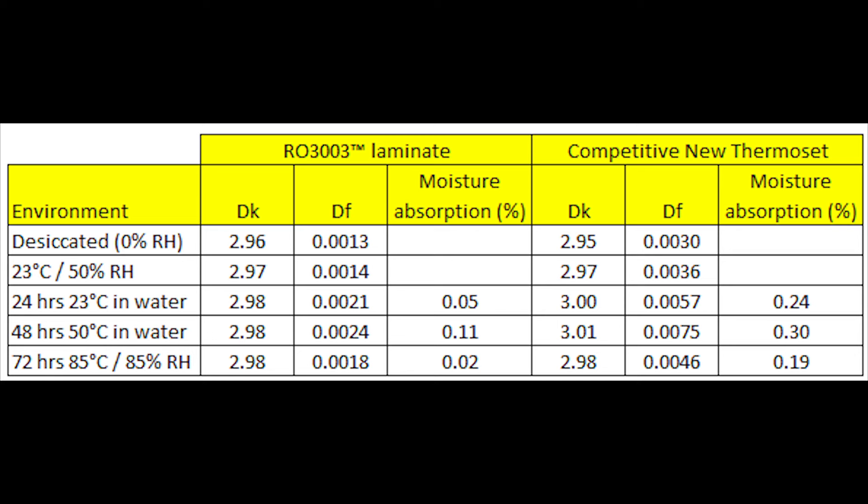Looking at humidity testing, the worst-case scenario is water submersion — one test at 24 hours at room temperature water, and one at 48 hours at 50 degrees C water. These are not realistic tests, but they are aggressive. Comparing to the baseline of 23 degrees C and 50 percent RH, the dielectric constant doesn't change too much. However, the dissipation factor does. For RO3003, the baseline is about 0.0014, and after 24-hour water submersion it goes up to 0.0021, and after 48 hours up to 0.0024.